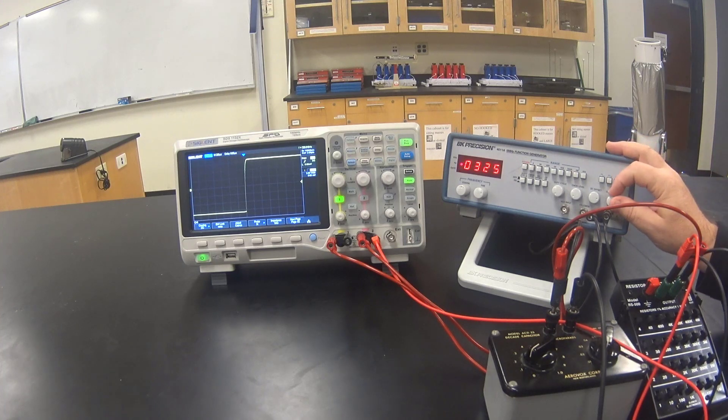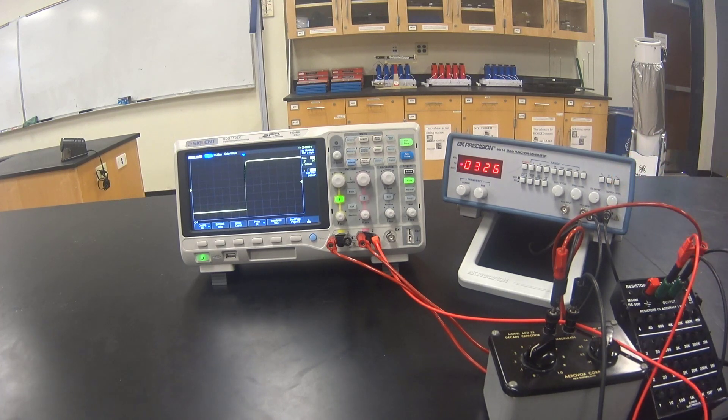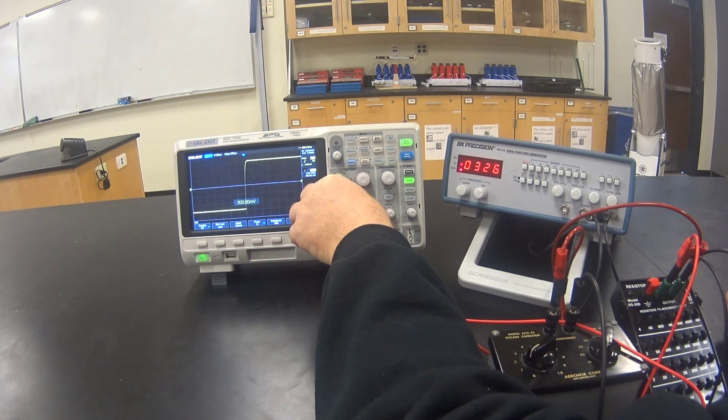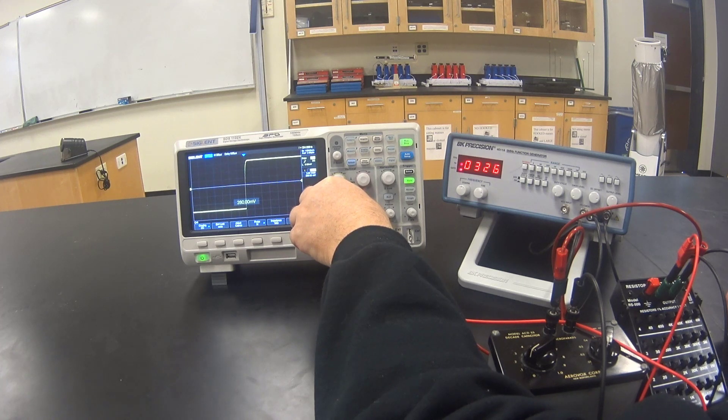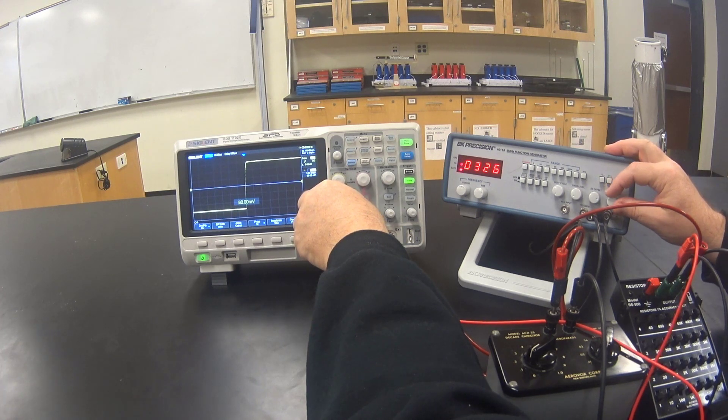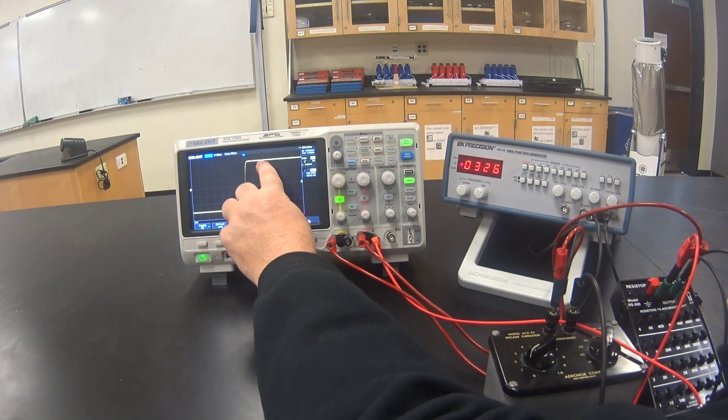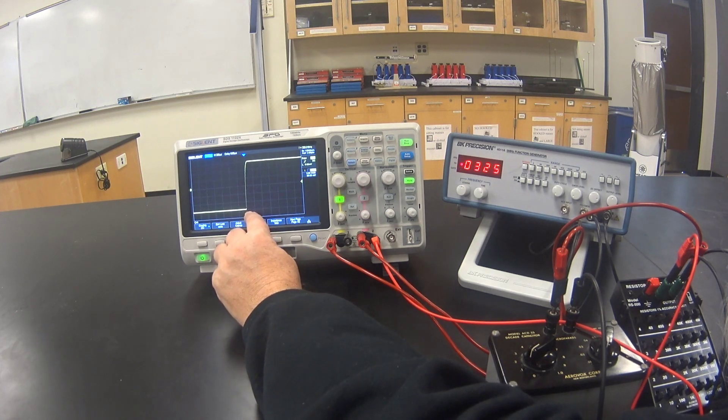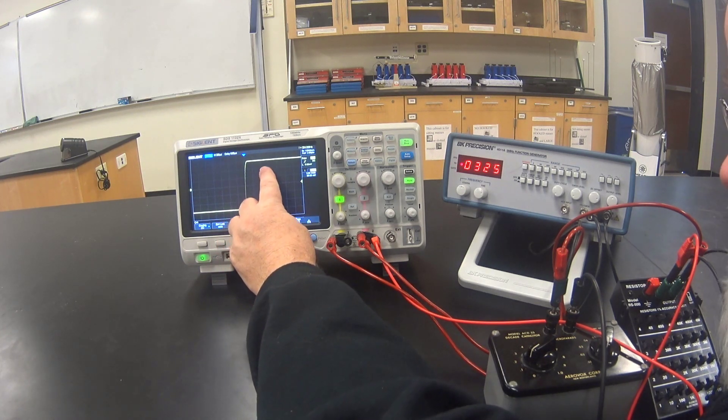Adjust the output level on the function generator and the ground adjust on the oscilloscope until you can get the top and bottom of your signal lined up with some convenient lines on the oscilloscope. Then I'll count the divisions between the bottom and the top: one, two, three, four, five, six.